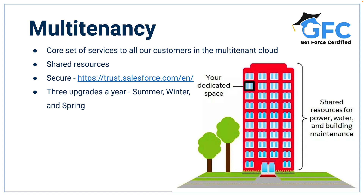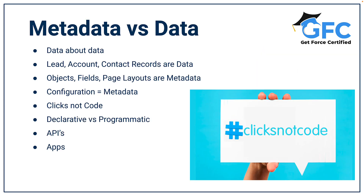On top of that foundation sits the platform, powered by metadata and made up of data services, artificial intelligence, and APIs which allow for development. But what is metadata? It's data about data — data about the structure of your Salesforce org. For example, the lead object. A lead record contains data about the lead, such as the name, the email address, and the telephone number.